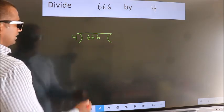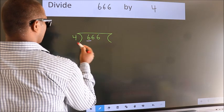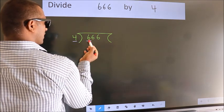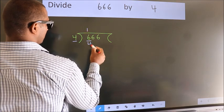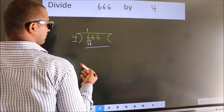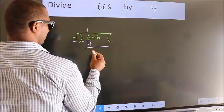Next. Here we have 6, here 4. A number close to 6 in the 4 table is 4 times 1 is 4. Now we should subtract. We get 2.